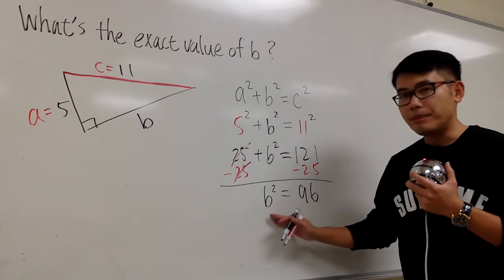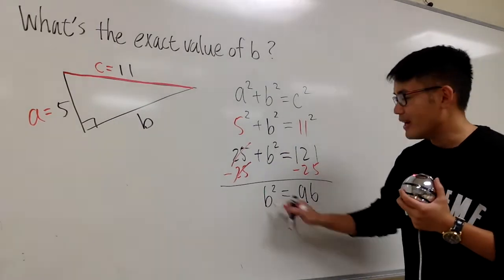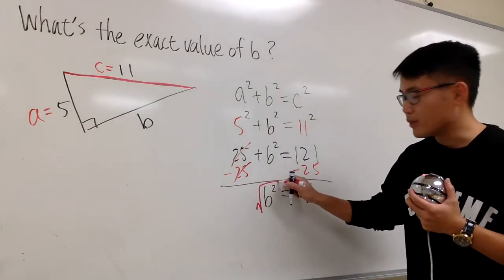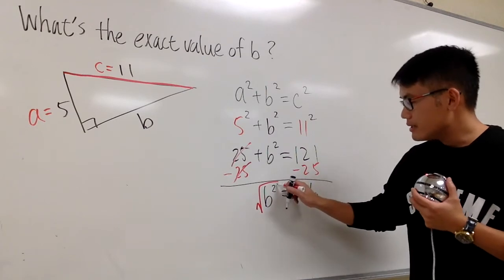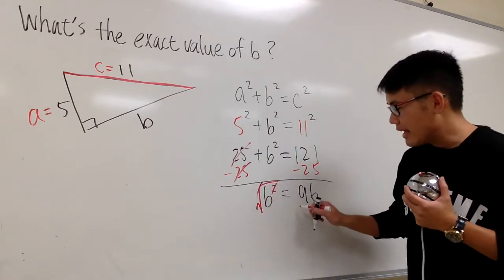Well, this is b², it's not b yet, so I'm going to take the square root on both sides. Because this way, square and square root cancel, and in this case,